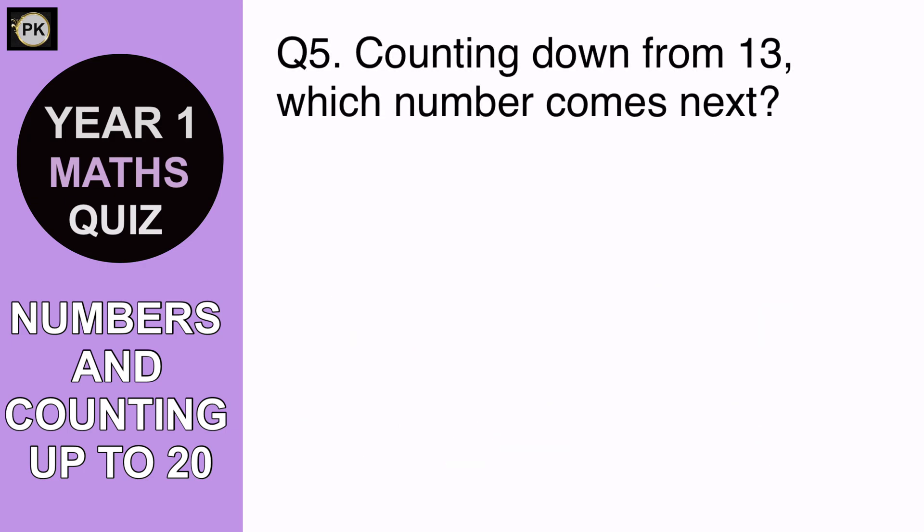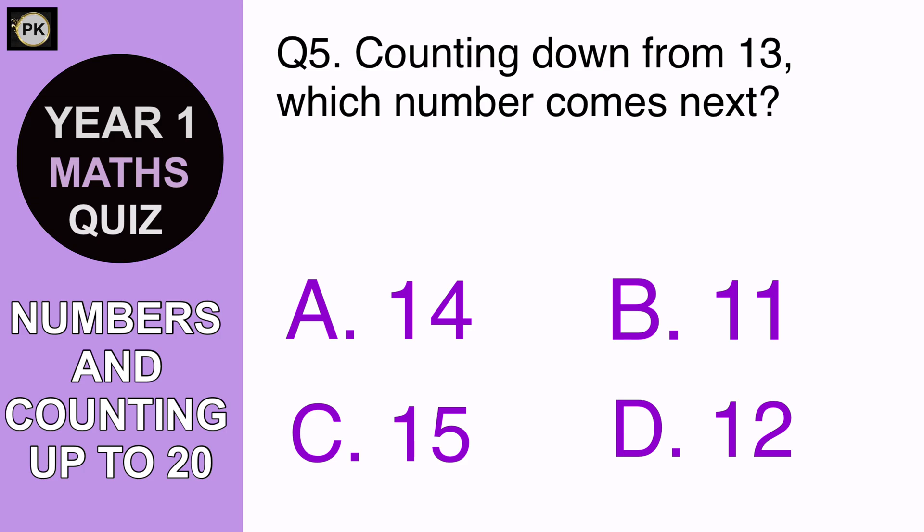Counting down from 13, which number comes next? A. 14, B. 11, C. 15 or D. 12? And the answer is D. 12.